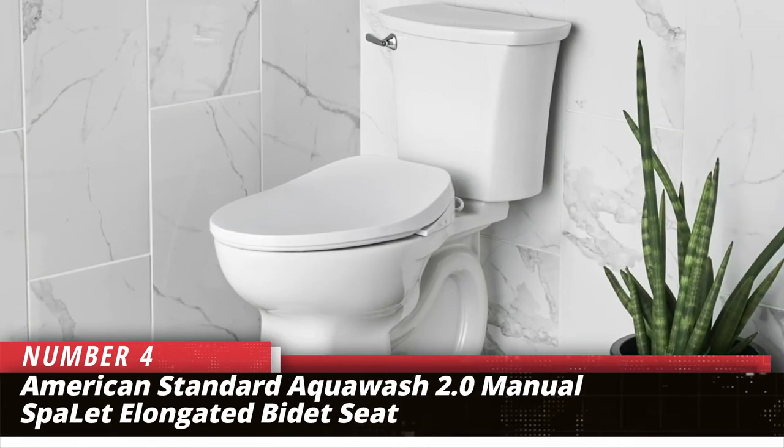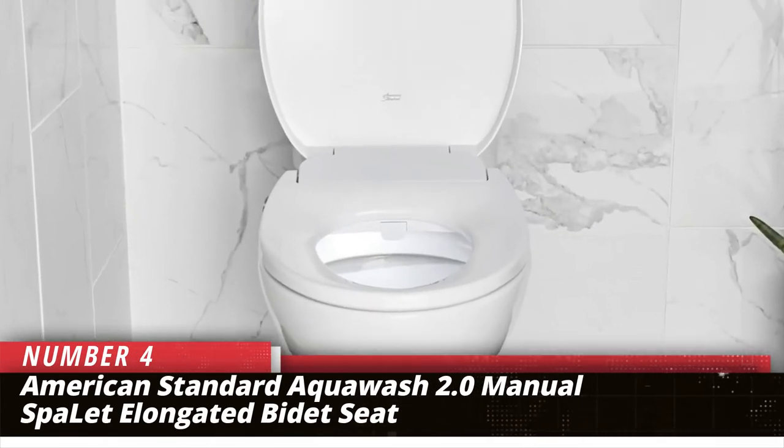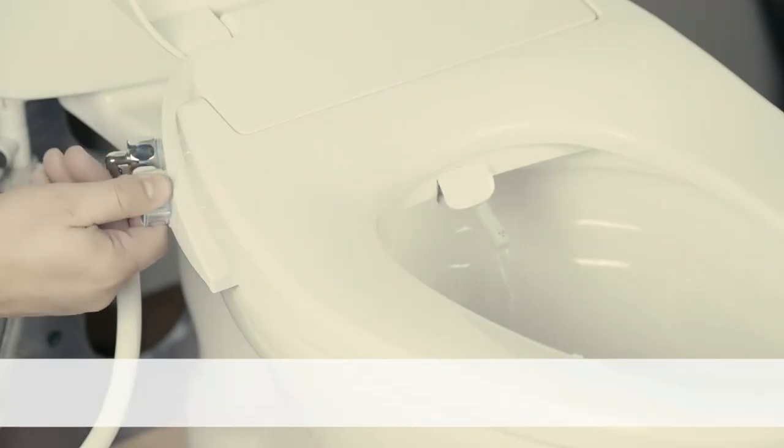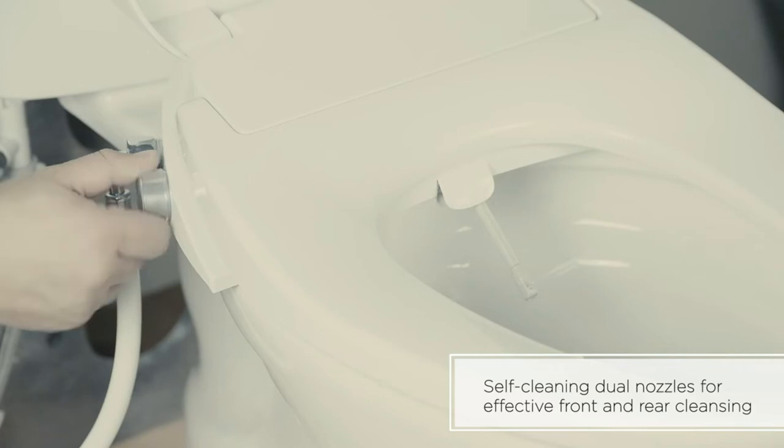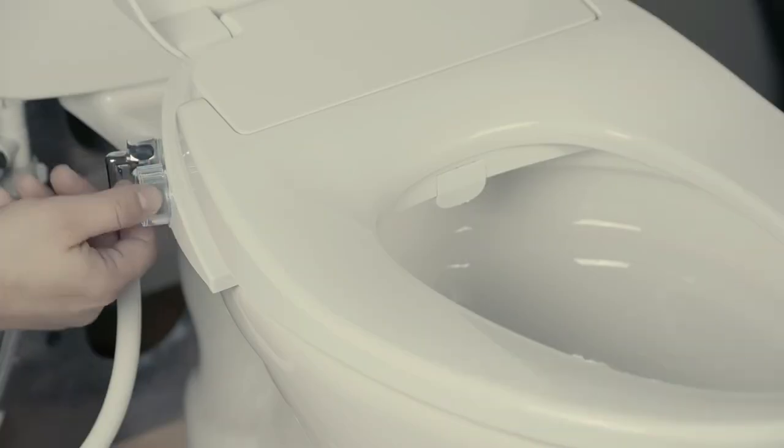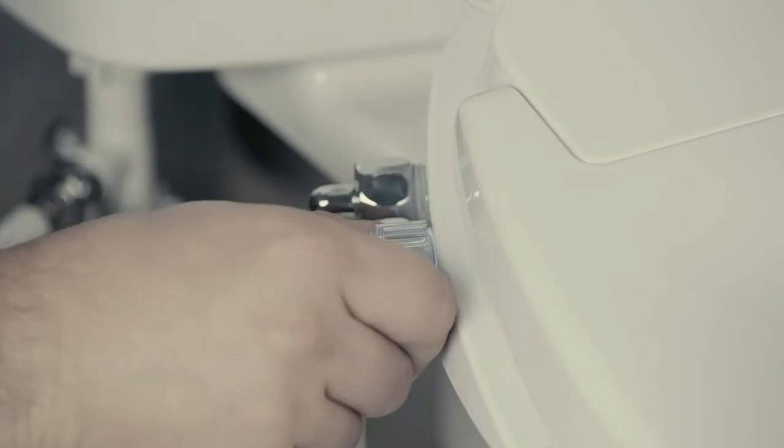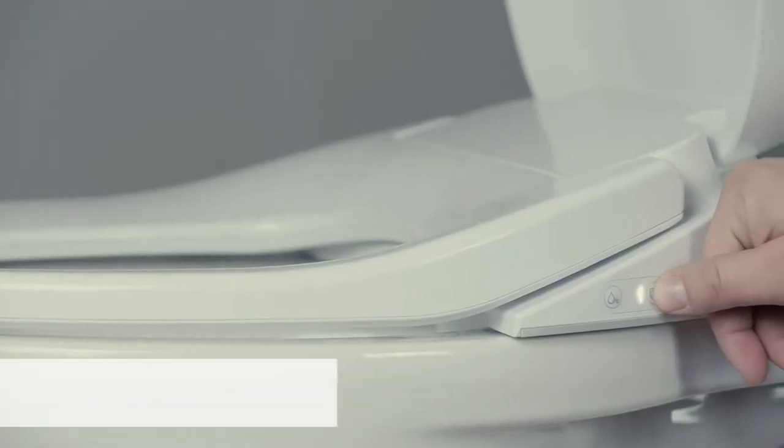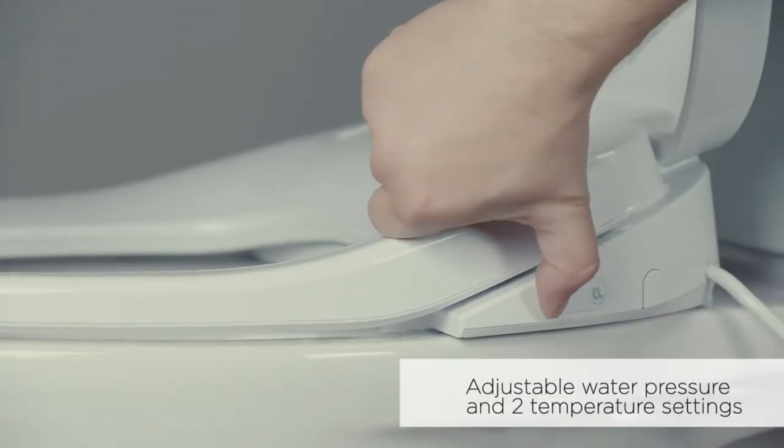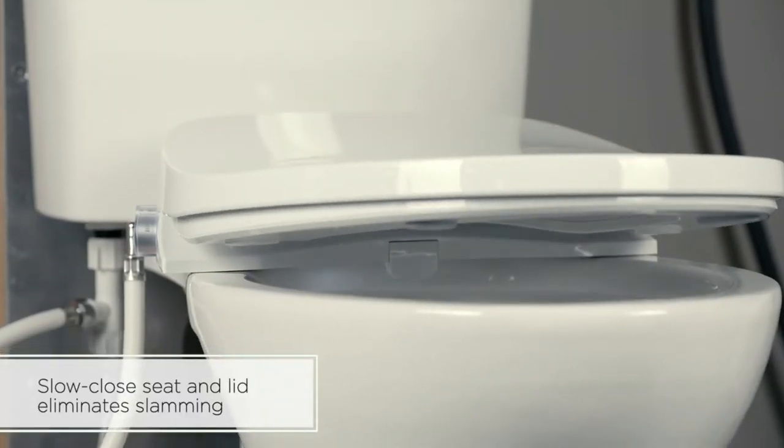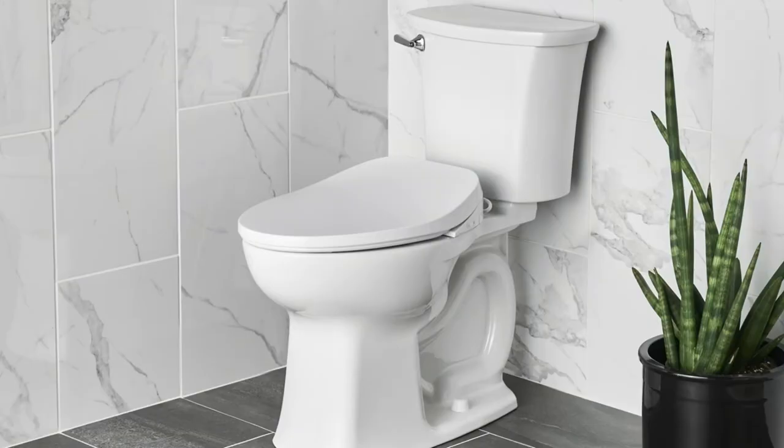Number 4. American Standard Aqua Wash 2.0 Manual Spallette Elongated Bidet Seat. This low-profile seat fits all American standard toilets with elongated seats and most other brands, too. It has dual, self-cleaning nozzles for a thorough front and rear cleaning. You control the angle, temperature, and pressure via the easy-to-use dial on the side, and a built-in soft nightlight makes nighttime trips extra safe. The soft-close seat can be removed entirely with the touch of a button, which makes it easy to clean the toilet itself and with fewer bells and whistles.